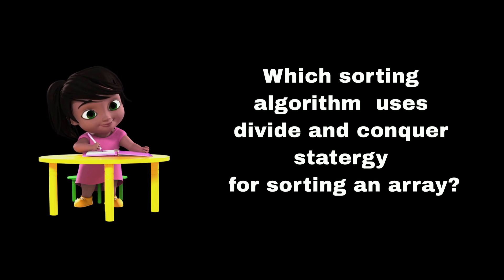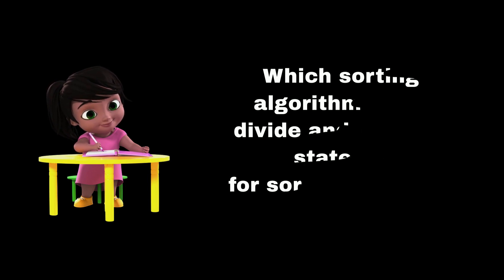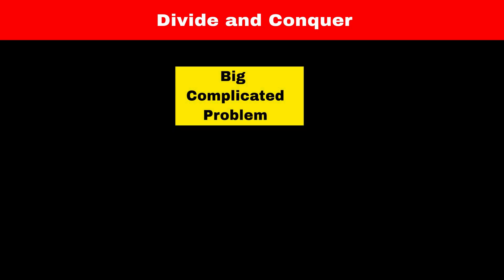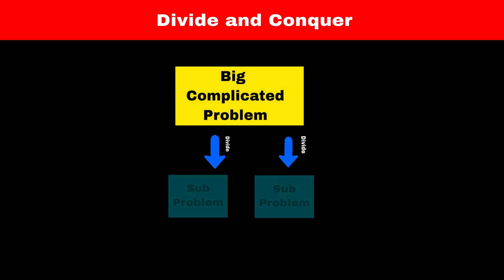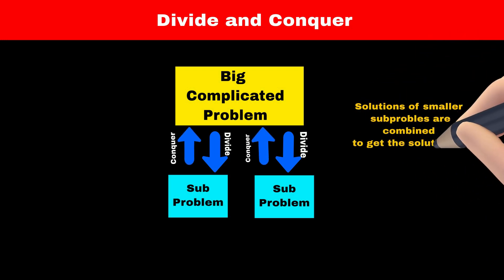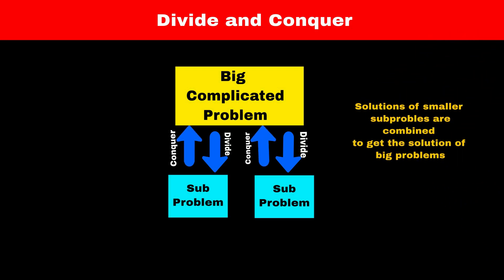Do you know which sorting algorithm uses divide and conquer strategy to sort an array? Divide and conquer strategy is used to solve big complicated problems. The big problem is divided into smaller sub-problems and the solution of the sub-problems are then combined to give the solution of the original big complicated problem.